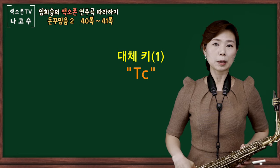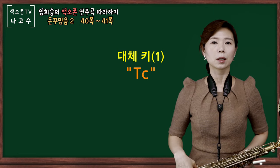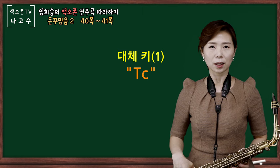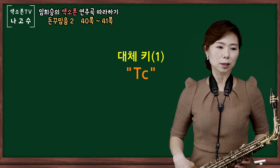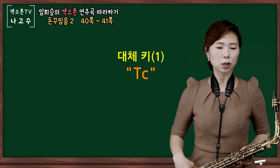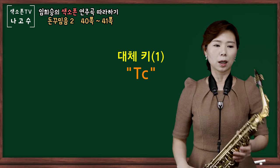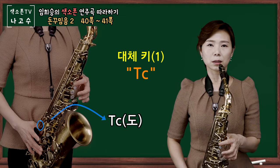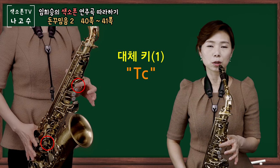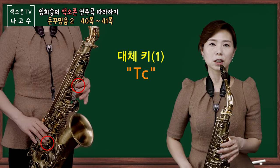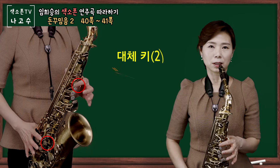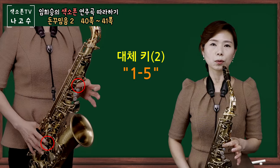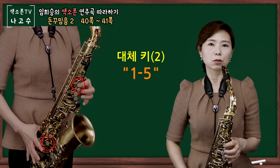돈 꾸밈음 2번 형태에 사용된 대체 키는 돈 꾸밈음 1번 형태를 연습하실 때와 같습니다. C 메이저에서 C 도, C 라샵, C가 나오는데, C 도는 T C 키, C 다시 오른손 가운데 키를 눌렀다가 떼주시면 되겠습니다. C 도, C 라샵, C 이런 형태가 되겠고, 왼손 1번 오른손 5번 키를 눌렀다가 떼주시면 되겠습니다.